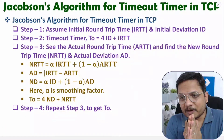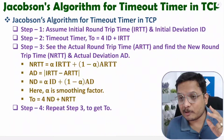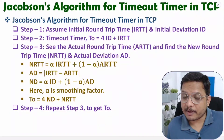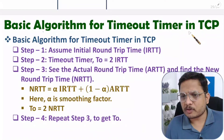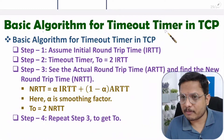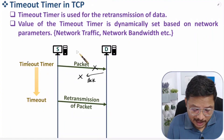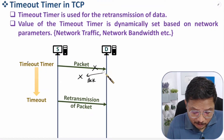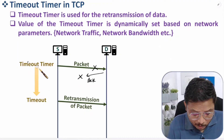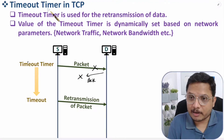Hello friends, welcome to Engineering Funda Family. In this video I'm going to explain Jacobson's algorithm for timeout timer calculation in TCP. In my last video I explained the basic algorithm for timeout timer calculation. The timeout timer works like this: when a sender sends any packet, it starts a timeout timer, and if the sender is not receiving acknowledgement, after timeout it will do retransmission.